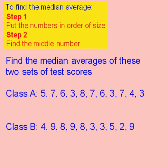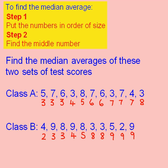I'm now going to find the median average for these two sets of values. The first step is to put the numbers in order — I've done that here. The easiest way to find the middle is to cross the numbers off starting at each end. So if I cross off the 3 and the 8, I can then do another 3 and a 7, a 3 and a 7, and so on. I'm left with a 6 in the middle, so 6 is my median.